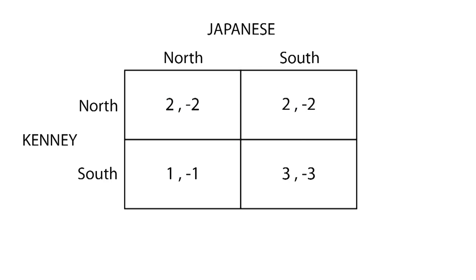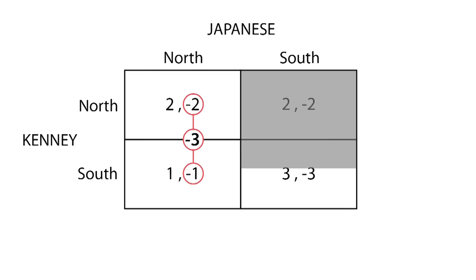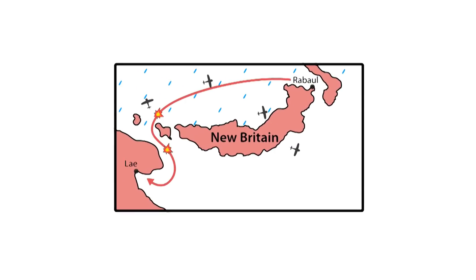However, the Japanese do have a weakly dominating strategy, which is to go north, since the sum of payoffs is strictly better. Since for the Japanese the strategy go north weakly dominates strategy go south, we eliminate the strategy go south for the Japanese. Now that we only consider the Japanese going north, Kenney's strategy go north is strictly dominant over strategy go south, which will be eliminated. Therefore, north-north is the weak dominant strategy equilibrium.